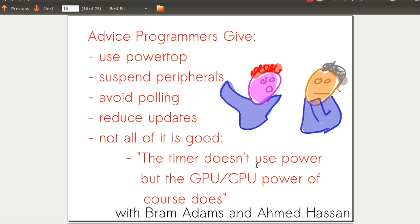Some answers included: use PowerTop, a nice estimator of how much a process uses; suspend peripherals like the mouse, keyboard, modems; avoid polling, use blocking; reduce updates; reduce timeouts. But not all of the suggestions were good.